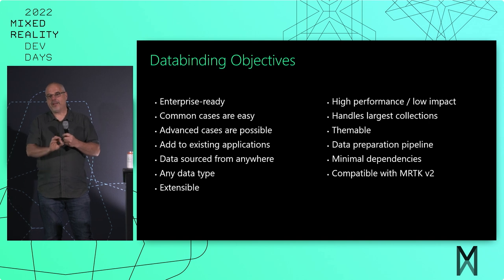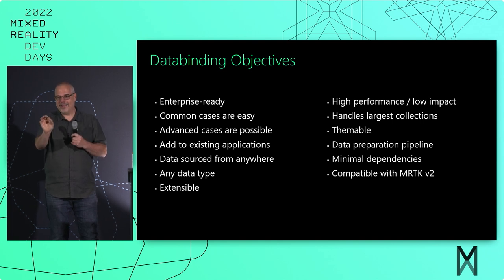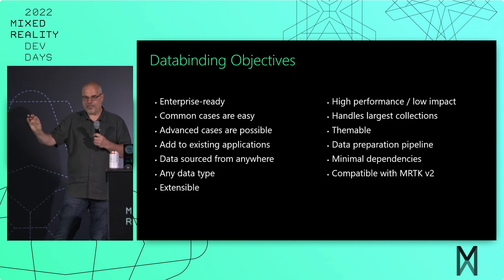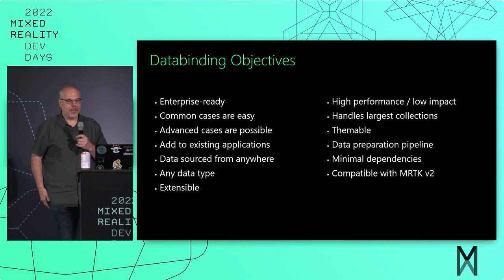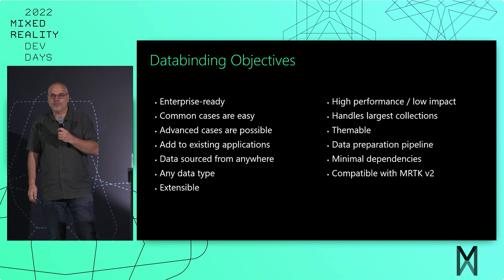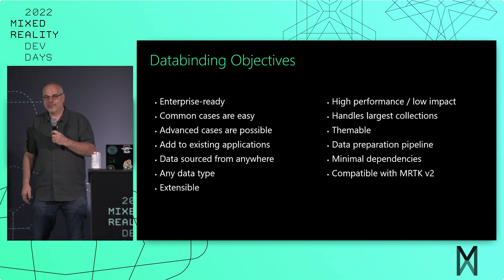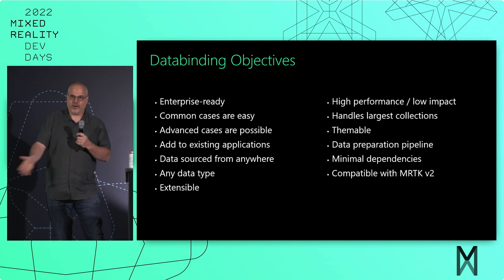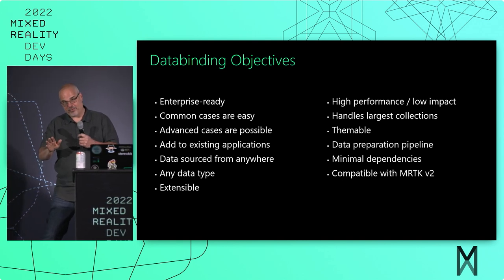Why don't we leverage all this plumbing to also expose theming? Data preparation pipeline is one thing we're talking about briefly that we don't have yet — the idea that you get data from a database but you don't necessarily want to show a number from zero to one. You might want to normalize that to a different range, or localize to a different language. That pipeline is on the roadmap and is scheduled for GA. Minimal dependencies mean you can use data binding with version 2. It actually works all the way back to Unity 2018 currently.